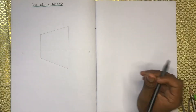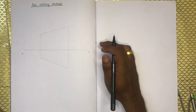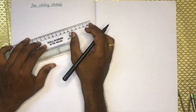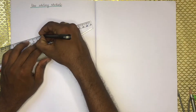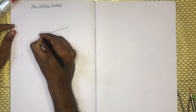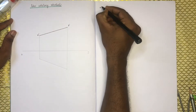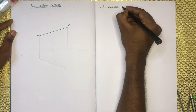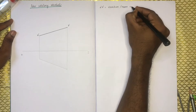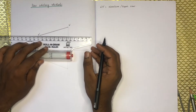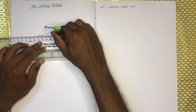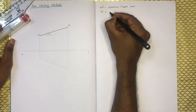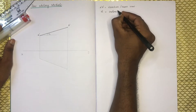This is A dash and this is B dash — A dash B dash. This is the elevation. This is the front view. A dash B dash is the elevation. We will mark inclination and write all the problems and all the notation.